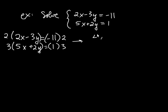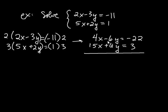Well, 2 times 2x is 4x. And then minus 6y equals negative 22. And what about this second equation? It's going to be 15x. And then 3 times positive 2y, that's plus 6y equals, and on the right-hand side it's going to be 3. And now we're ready to add these equations together. And the reason is because negative 6 and positive 6, that's going to give 0y, and the y will be eliminated. So I'm going to get 19x is equal to negative 19.